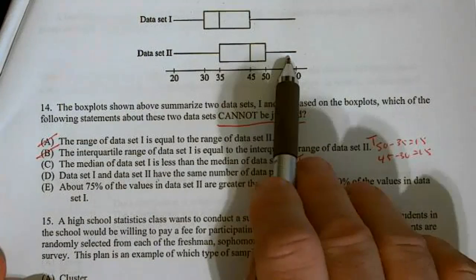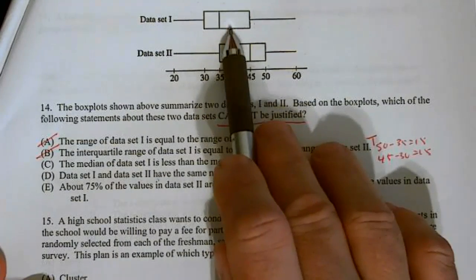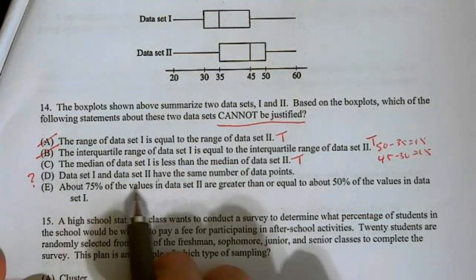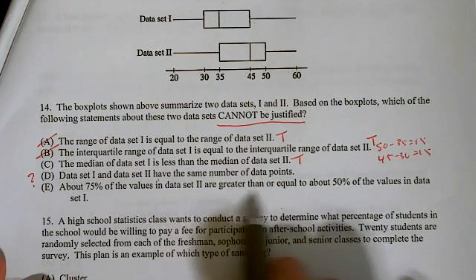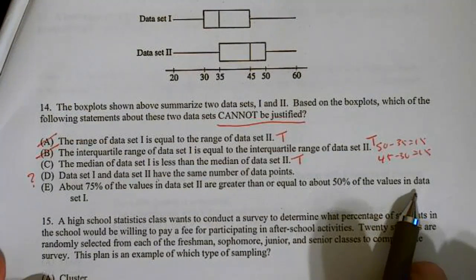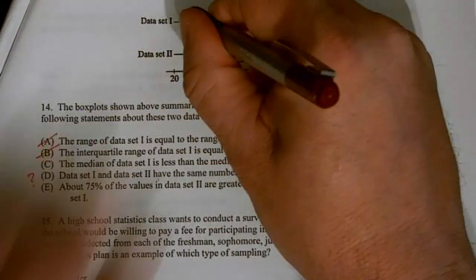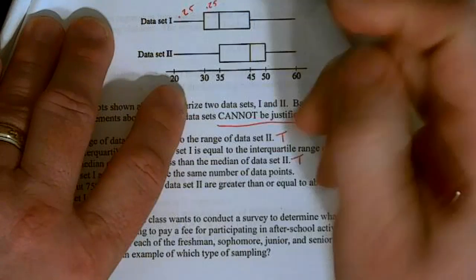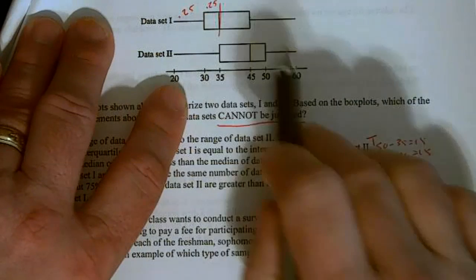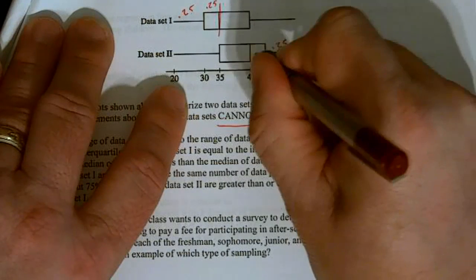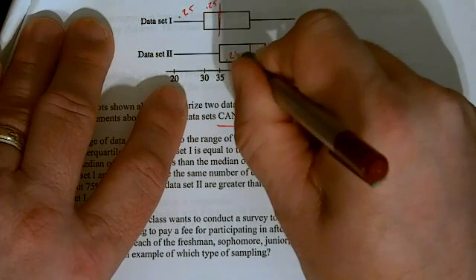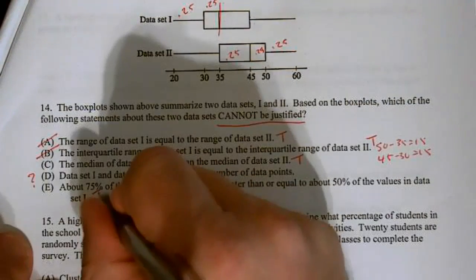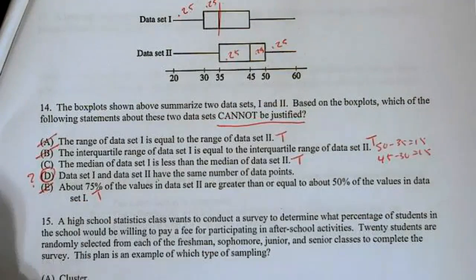Data set one and data set two have the same number of data points. I really don't know. This could be 1,000 data points, and this could be a million, or this could be 100. So, I'm not sure. This one looks possible. So, that could be my answer. About 75% of the values in data set two are greater than or equal to about 50% in data one. Well, remember, each section represents 25%. So, there's 50% right here, the median. And here I have, there's 25, here's another 25, and here's another 25. So, that's 75%. It looks like about 75% is greater than 50%. So, this looks true. So, our answer to number 14 is D.